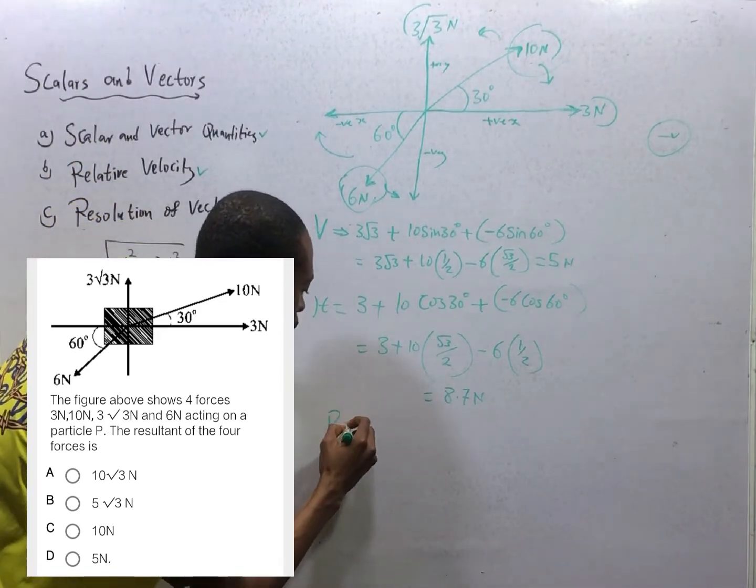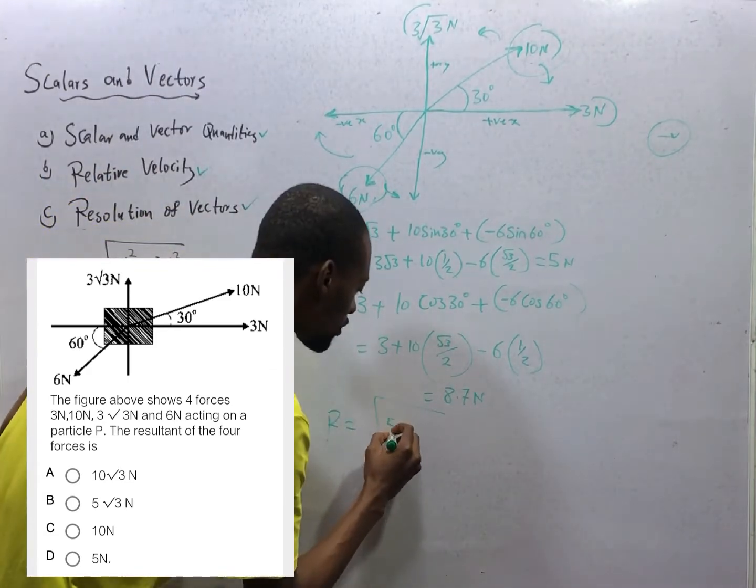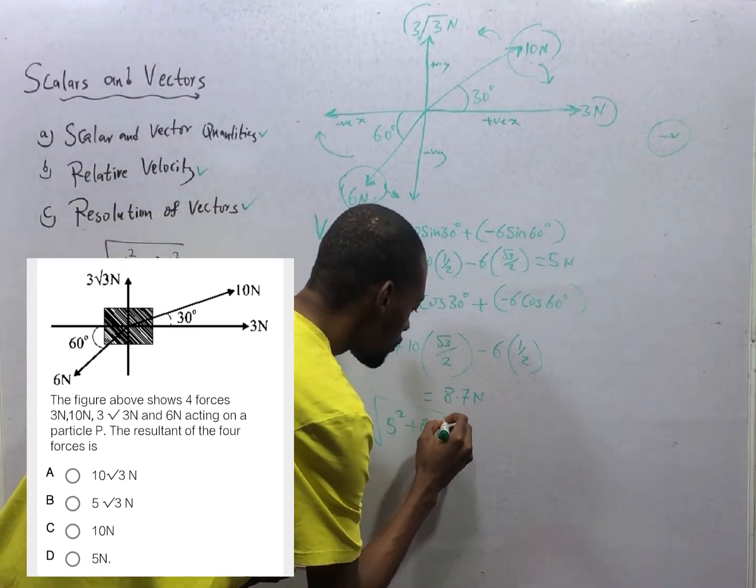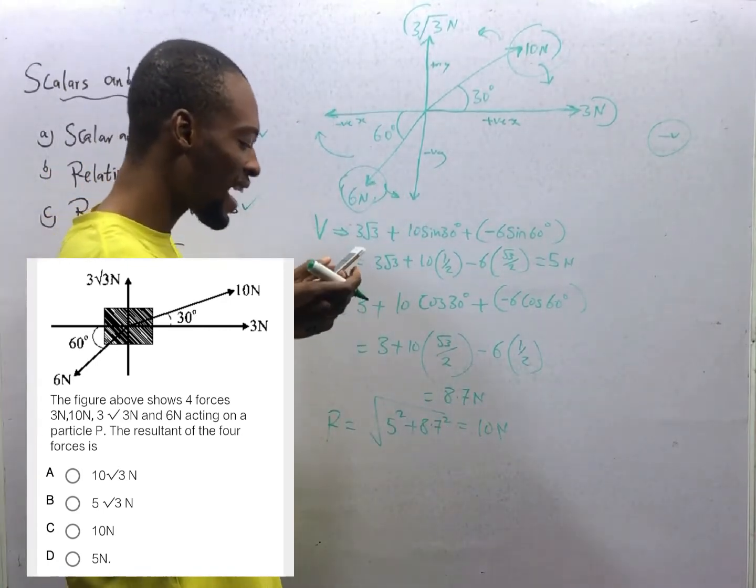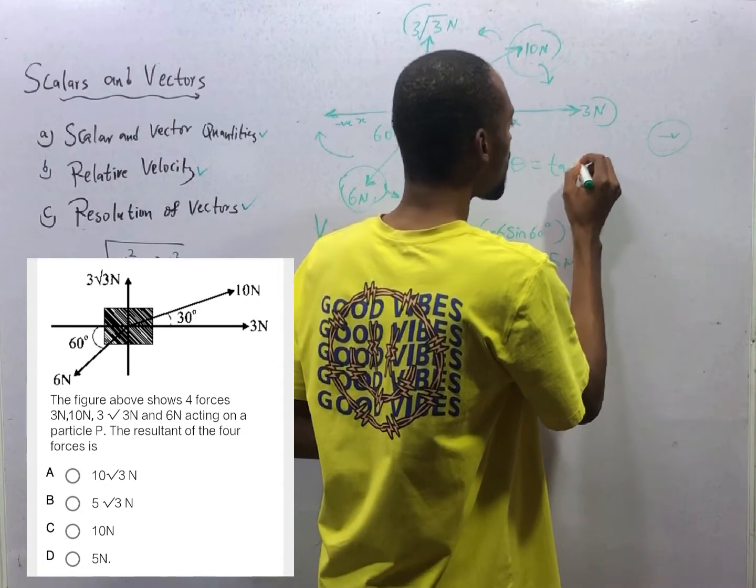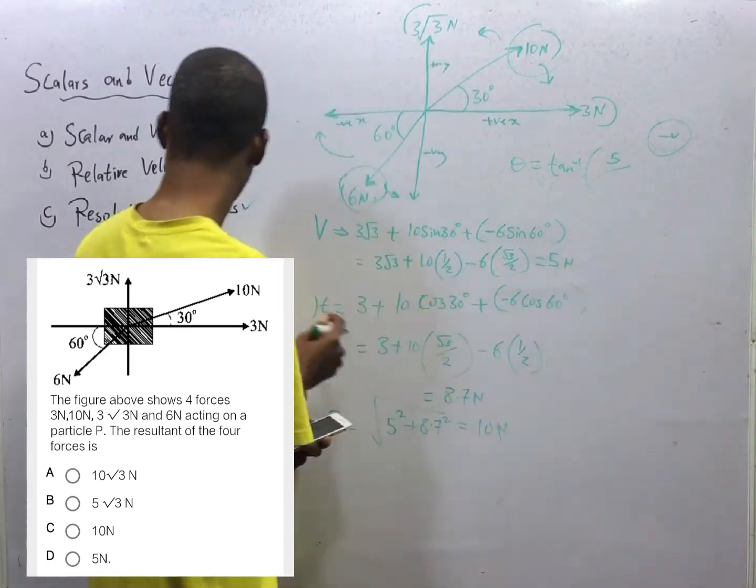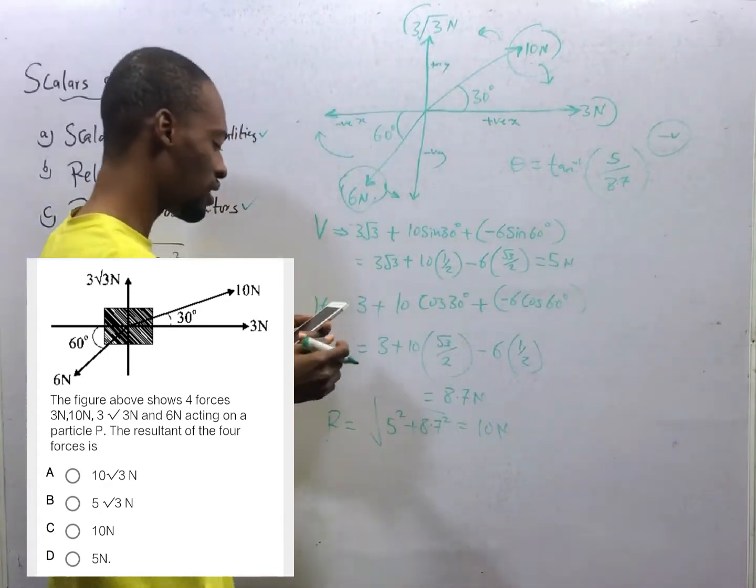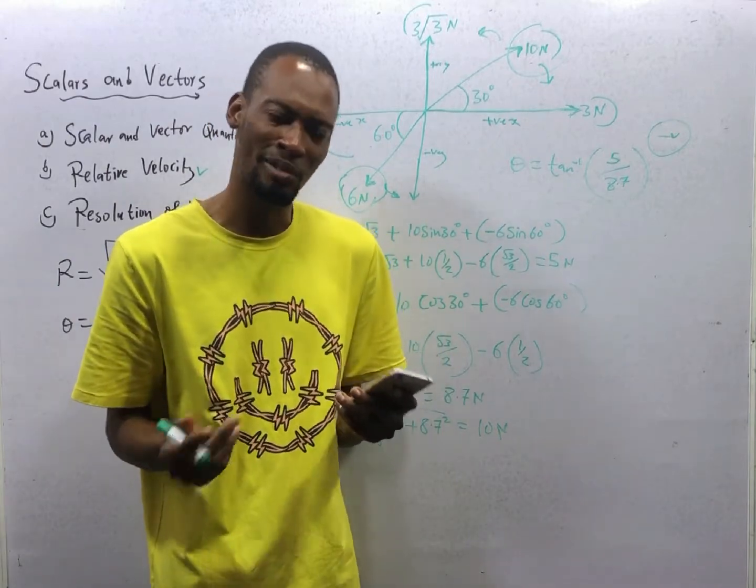We are asked for the resultant. The resultant would simply be equals vertical squared, 5 squared, plus horizontal squared, 8.7 squared. That should give you 10 newton. What if we are asked for the direction? Direction theta is equals tan inverse of vertical 5 newton over horizontal 8.7 newton. So this will give you the direction. Ladies and gentlemen, to me I hope resolution of vectors makes sense to you now.